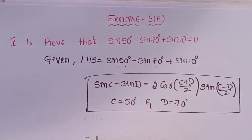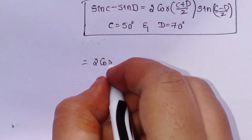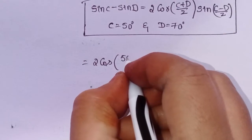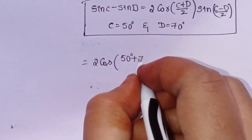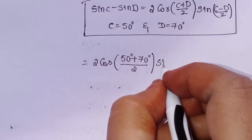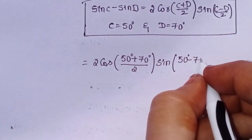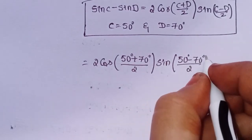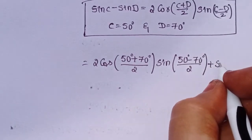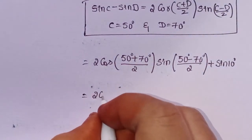Substitute: 2 cos of (C plus D) by 2 into sin of (C minus D) by 2 plus sin 10 degrees.